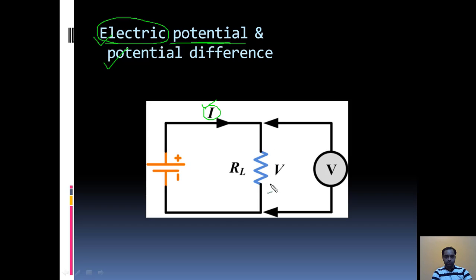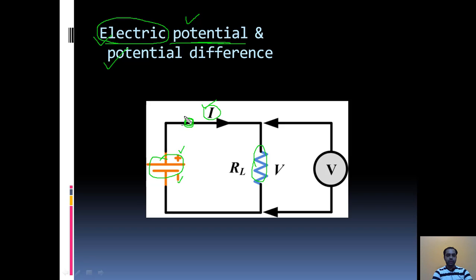This is a circuit. As you can see, this is the source of energy, which is a DC source of energy. This is the positive terminal and this is the negative terminal. This is a load. Current I is flowing in this direction and coming back to the negative terminal. If you want to measure the energy associated with a certain point in this circuit, the amount of energy associated with that point is known as the electric potential of that point.